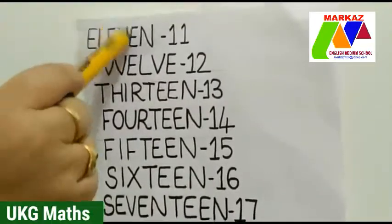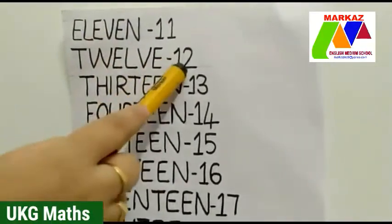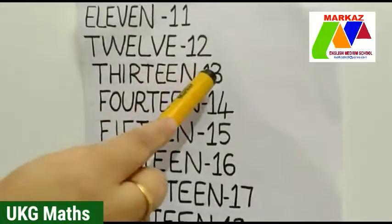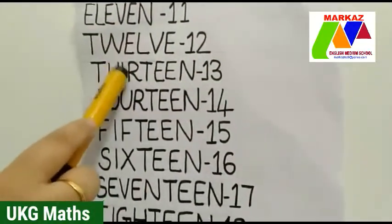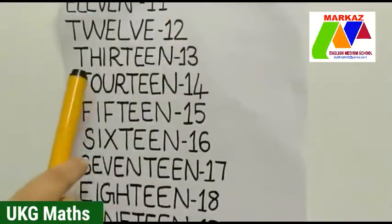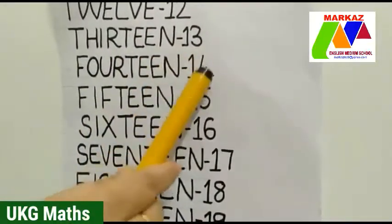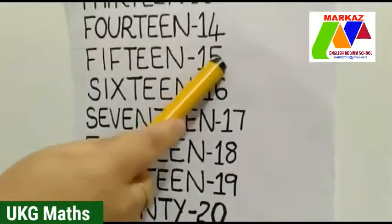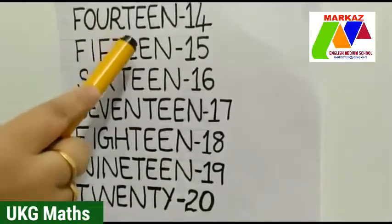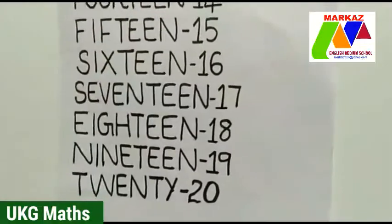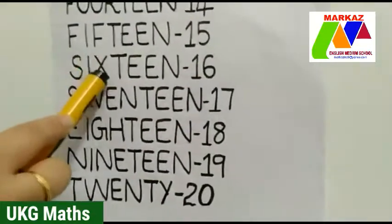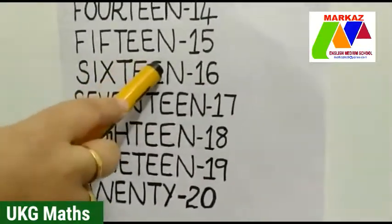Let's go ahead and revise. 11 — E-L-E-V-E-N. Next number 12 — T-W-E-L-V-E. Next number 13 — T-H-I-R-T-E-E-N. Next number 14 — F-O-U-R-T-E-E-N. Which number is this? This is 15 — F-I-F-T-E-E-N. Next number — yes, 16 — S-I-X-T-E-E-N.